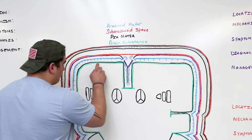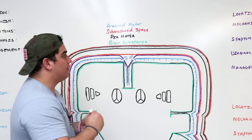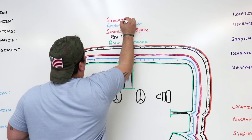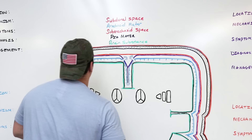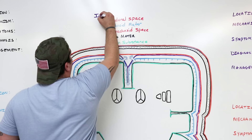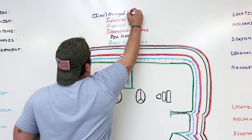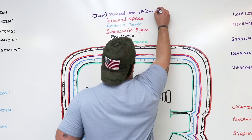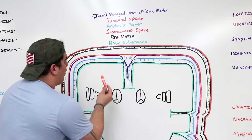After the arachnoid mater, there's another space between the blue line and the purple line — that's called the subdural space. After the subdural space, we have the purple layer, which is part of the dura mater. There are two parts: one is the inner — or meningeal — layer of the dura mater. 'Dura' means tough, so it's the tough mother. The purple layer is the inner meningeal layer of the dura mater.